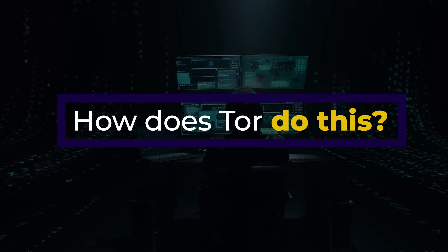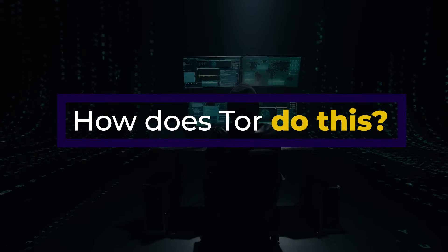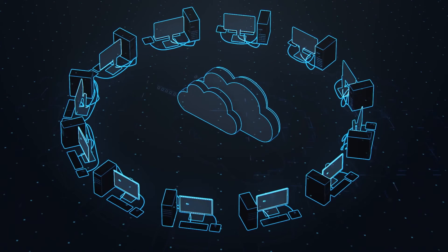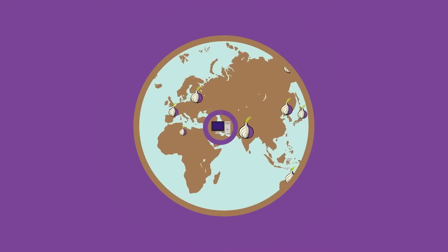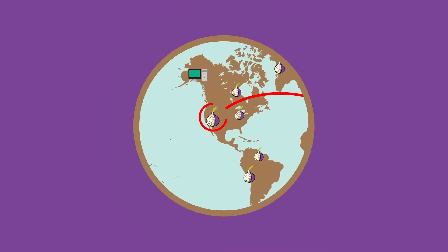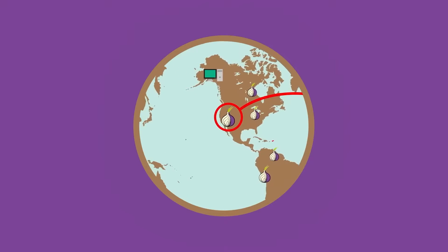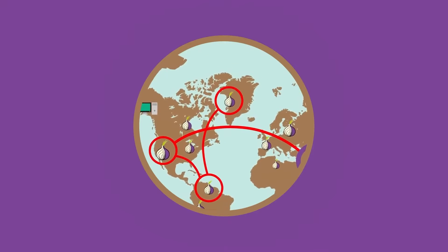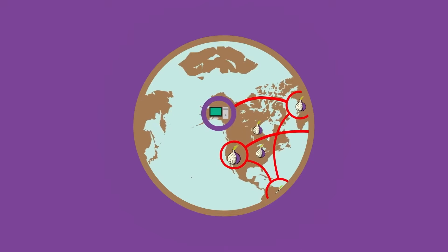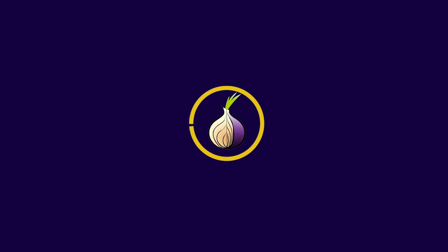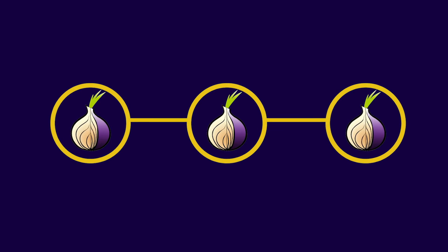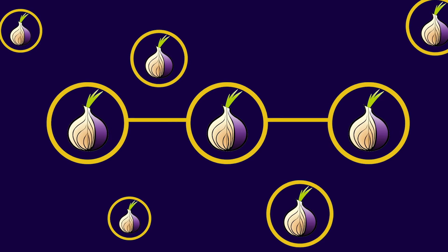So how does Tor achieve this level of anonymity? Well, the magic lies in its unique structure. When you use the Tor Browser, your internet traffic is routed through three random nodes or relays before they head to their final destination. Each relay only knows about its immediate predecessor and successor, but no others.